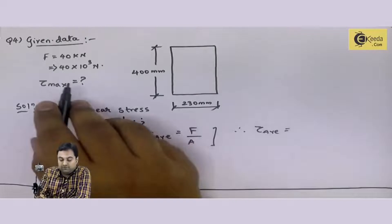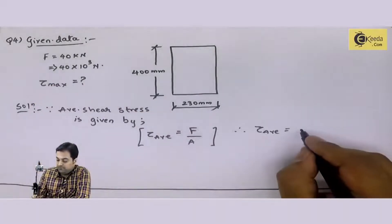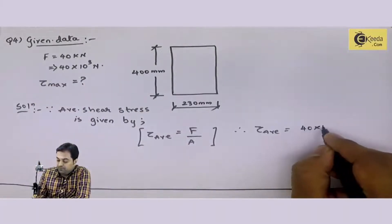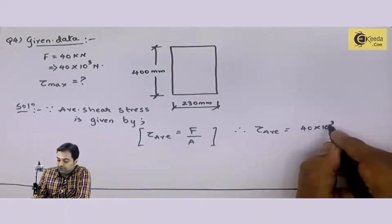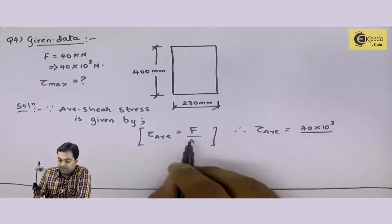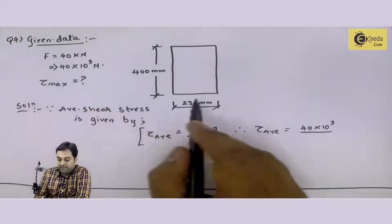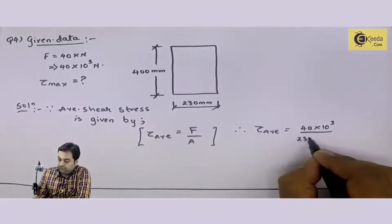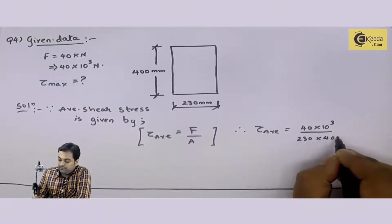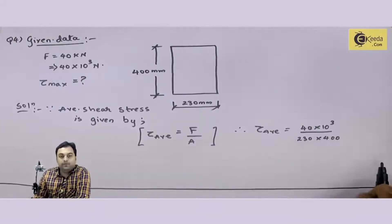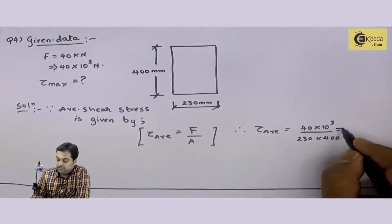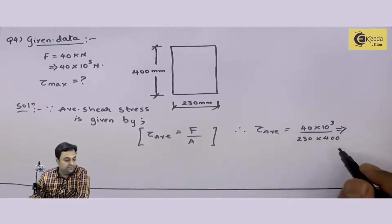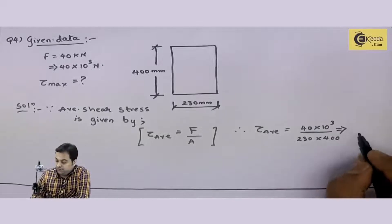Tau average is equal to shear force upon area. So tau average equals 40 × 10³ divided by 230 × 400. The value comes out to be 0.43 Newton per mm square.